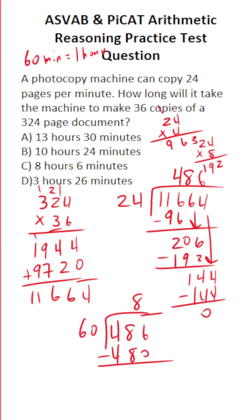486 minus 480 is 6. And just by looking at the answer choices, we know it's going to take 8 hours at least. Only one of them has 8 hours as an answer choice. And here's where we get our 6 minutes.